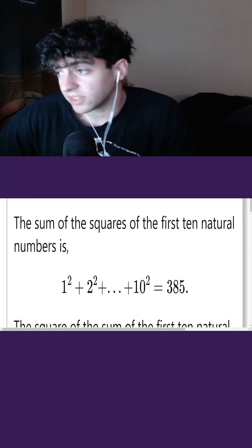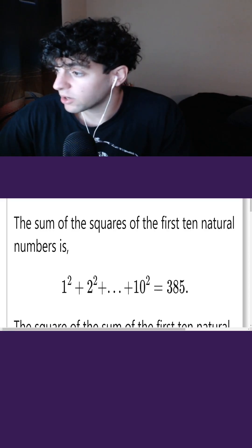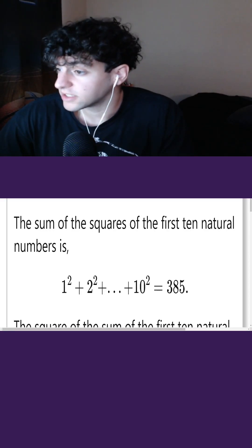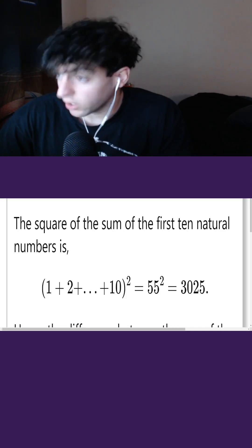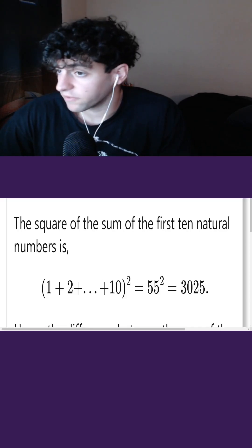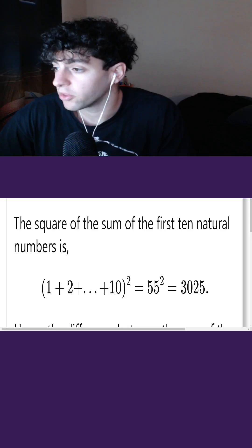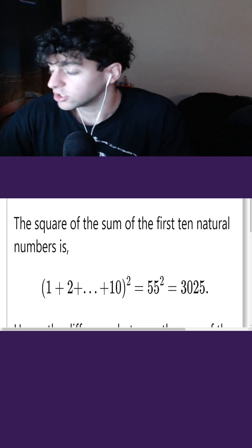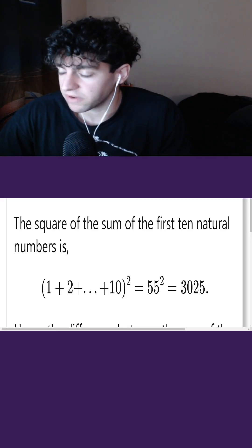Day six of solving math problems in C until NVIDIA hires me. We're told that the sum of the squares of the first 10 natural numbers — 1² + 2² + ... + 10² — equals 385. The square of the sum of the first 10 natural numbers — (1 + 2 + ... + 10)² — equals 55², which is 3025.